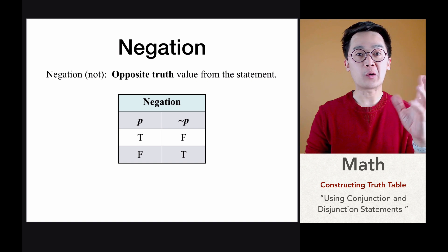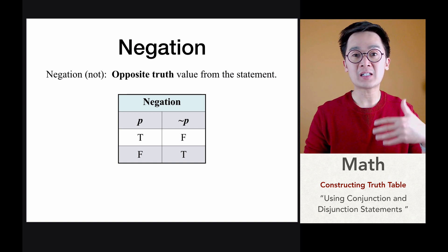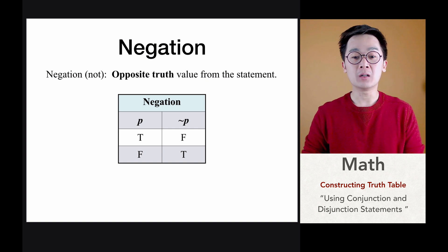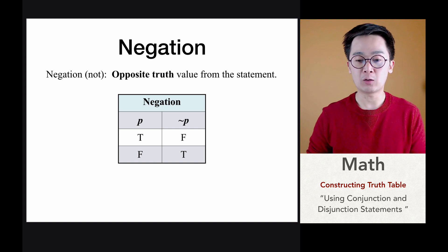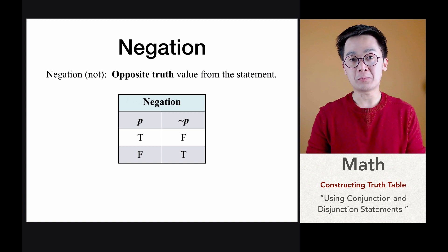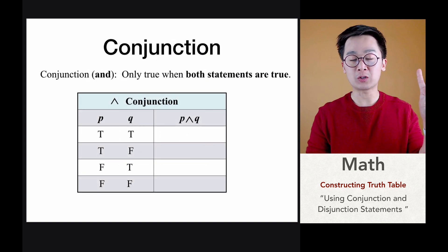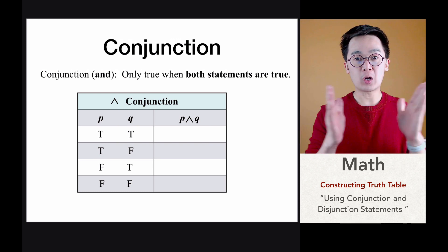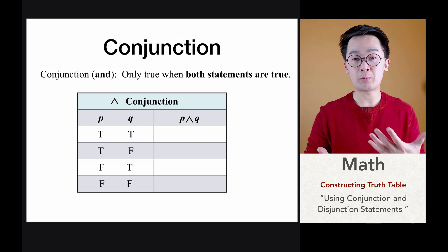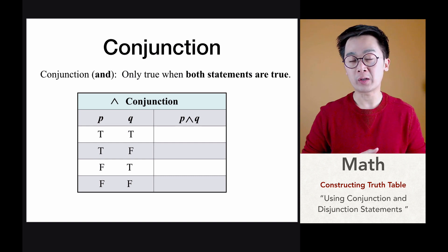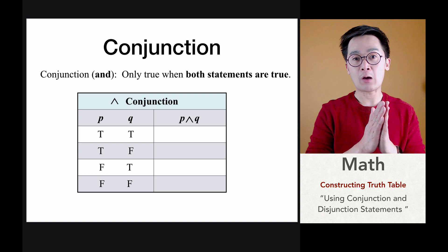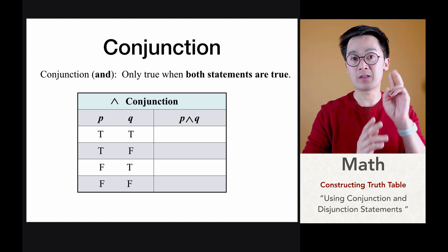So you're just going to negate your function, and this is how we apply the operation of negation in a truth table. Now let's say we're going to be working on a compound statement, which means we have two basic statements and we're going to combine them using an operation. We have several operations that we could use, and for today we're going to be seeing the conjunction and the disjunction operation, and how we can create a truth table out of those two operations.